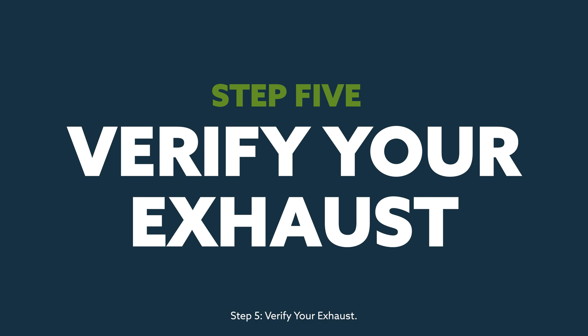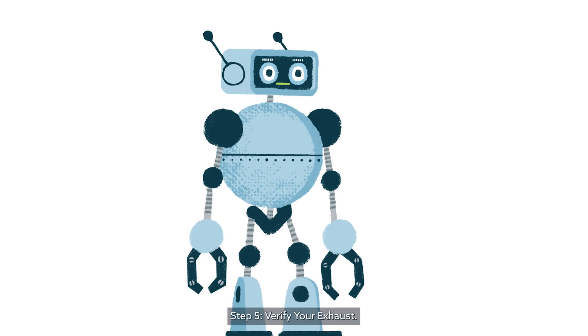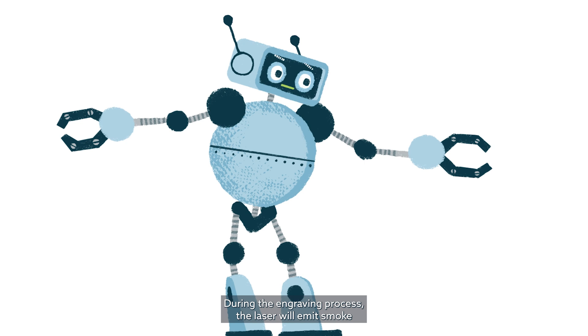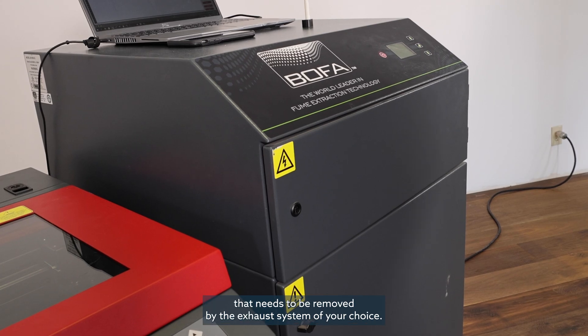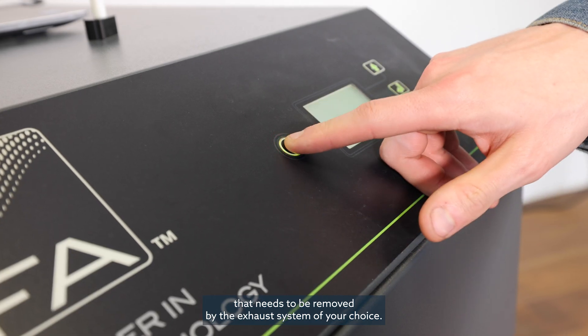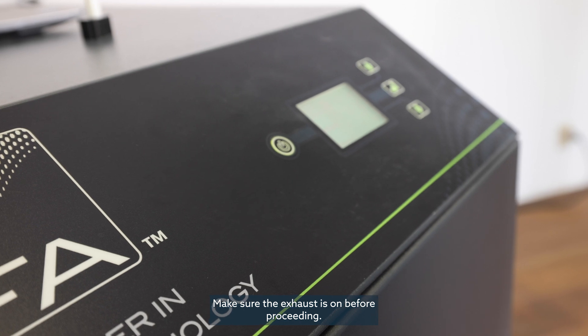Step 5: Verify Your Exhaust. During the engraving process, the laser will emit smoke that needs to be removed by an exhaust system of your choice. Make sure this exhaust is on before proceeding.